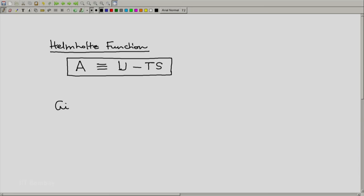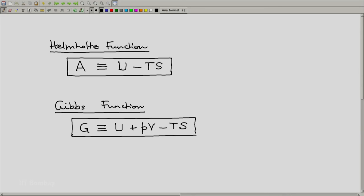And the fourth energy function which we will define and use is the Gibbs function. The symbol is G and it is defined as U plus PV minus TS. And because U plus PV is enthalpy we can write it as H minus TS or since U minus TS is the Helmholtz function it is also equal to A plus PV.